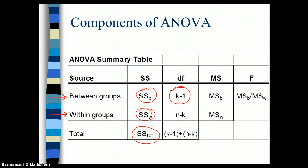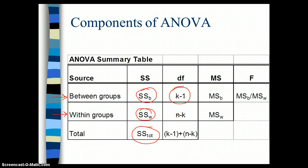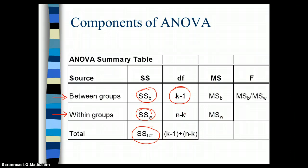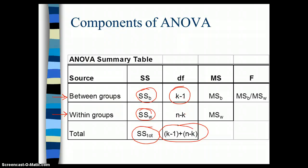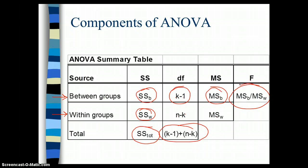We have degrees of freedom that we can allow variation to vary within each of these sections — between groups and within groups. K simply stands for the number of groups minus one. N is the number of participants or individuals, and K is the number of groups, so that's the sample N minus the number of groups. The total degrees of freedom is simply the degrees of freedom for between group plus the degrees of freedom within group. We can then calculate a mean square sum of squares between and within, and the F ratio is literally a ratio between the mean sum of squares between and the mean sum of squares within.